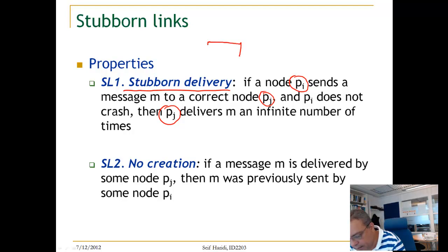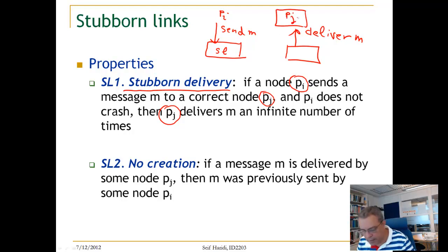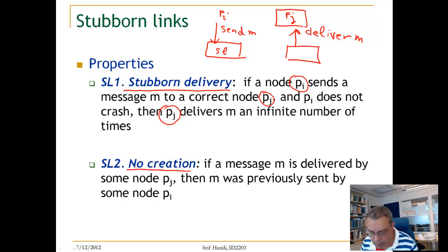then the receiver will deliver this message an infinite number of times. Here is our stubborn link component: if PI sends a message, then the delivery of M at the receiver side PJ will happen infinitely often. We also inherit the property of no creation, which means a message will not be delivered unless there is a previous send of that message from a process.